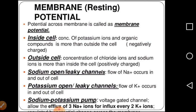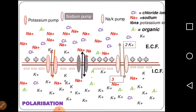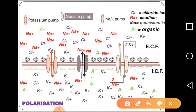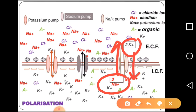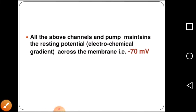The sodium channel allows passage of sodium ions, the potassium channel allows flow of potassium ions, and the sodium-potassium pump allows movement of three sodium ions out and two potassium ions in. All these channels and the pump maintain the resting potential across the membrane at minus 70 millivolts. At resting stage, the voltage across the cell membrane is minus 70 millivolts — remember this value.